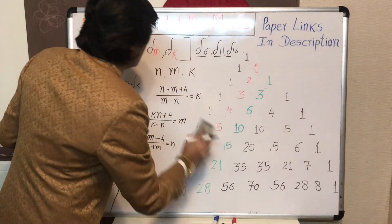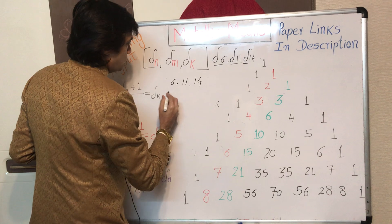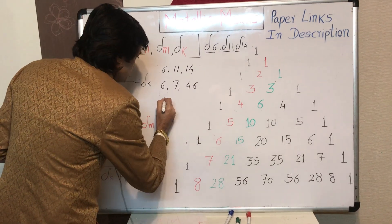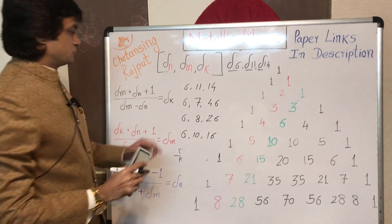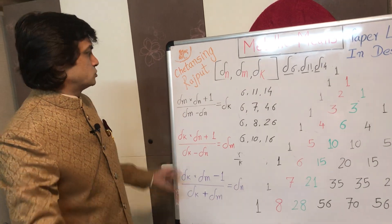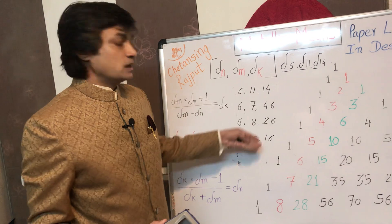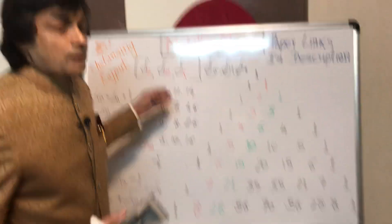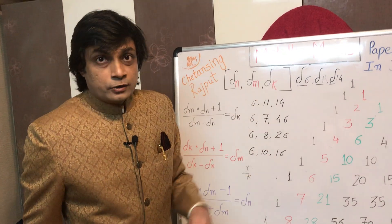Not just 6, 11, and 14 — the integer 6 forms several such triads. For example: 6, 11, 14; another triad is 6, 7, 46; another is 6, 8, 26; another is 6, 10, 16. The 6th, 10th, and 16th metallic ratios fit into this formula as a triad. Every integer forms multiple such triads, and these triads exhibit a beautiful geometry. Their geometric substantiation, mathematics, relation with Pascal's triangle, relation with primitive Pythagorean triples, and relation with Pythagorean primes — all these things I have published in my various papers.